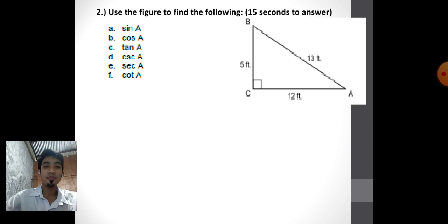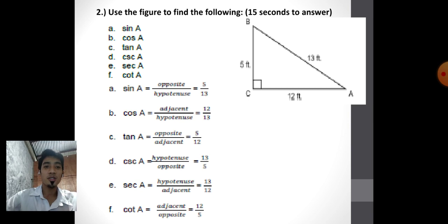Time's up. These are the answers. Sine A — opposite over hypotenuse — 5 over 13. Cosine A — adjacent over hypotenuse — 12 over 13. Tangent A — 5 over 12. Cosecant A — hypotenuse over opposite — 13 over 5. Secant A — hypotenuse over adjacent — 13 over 12. Cotangent A — adjacent over opposite — 12 over 5.